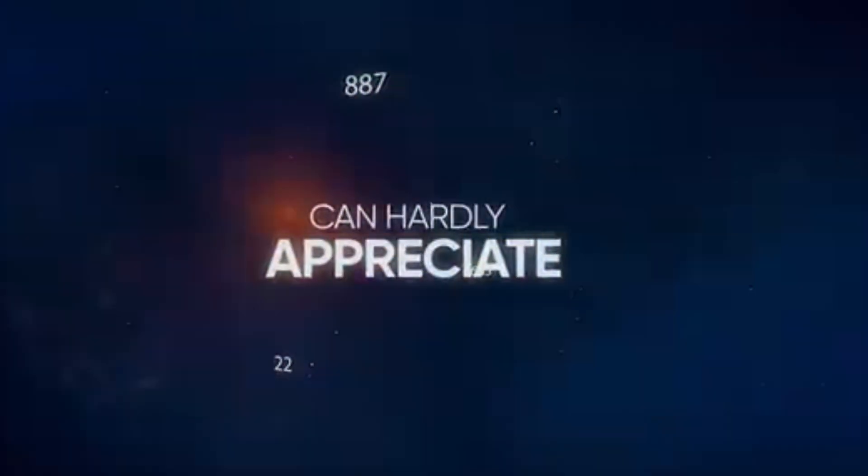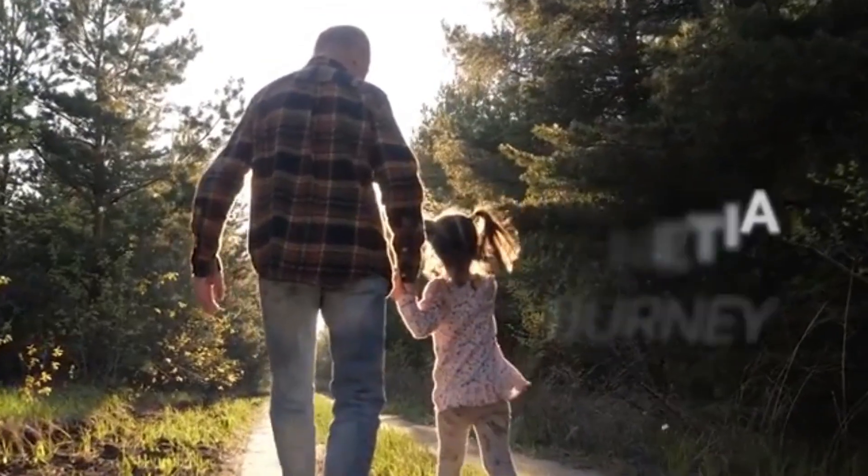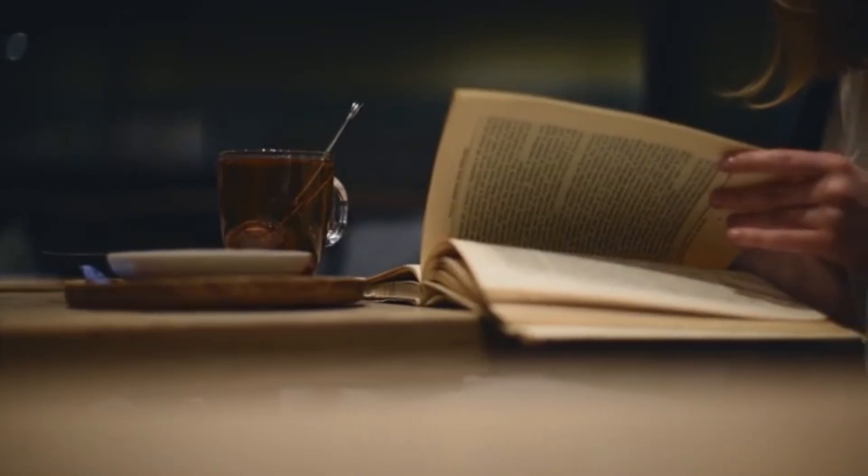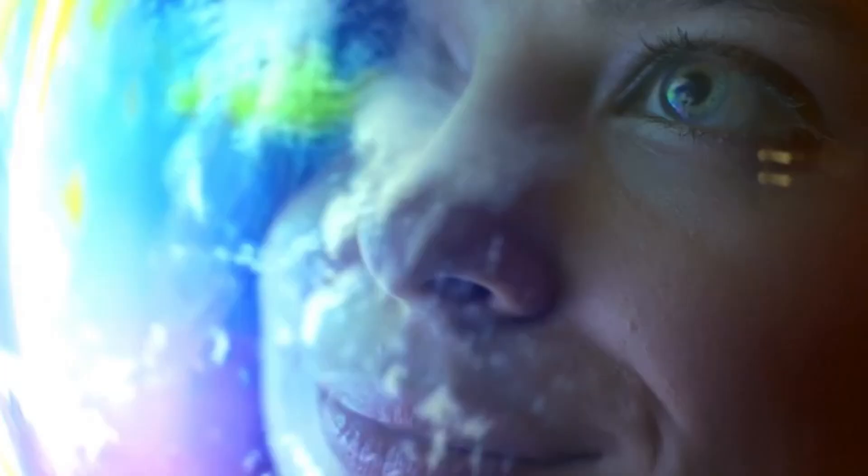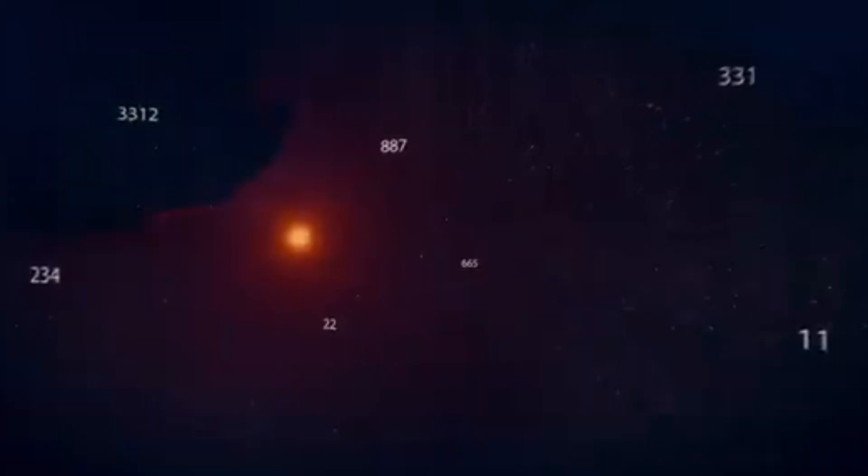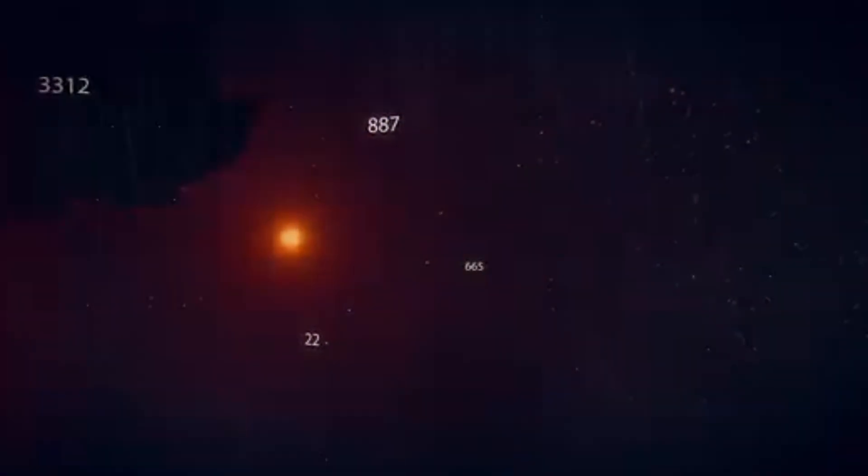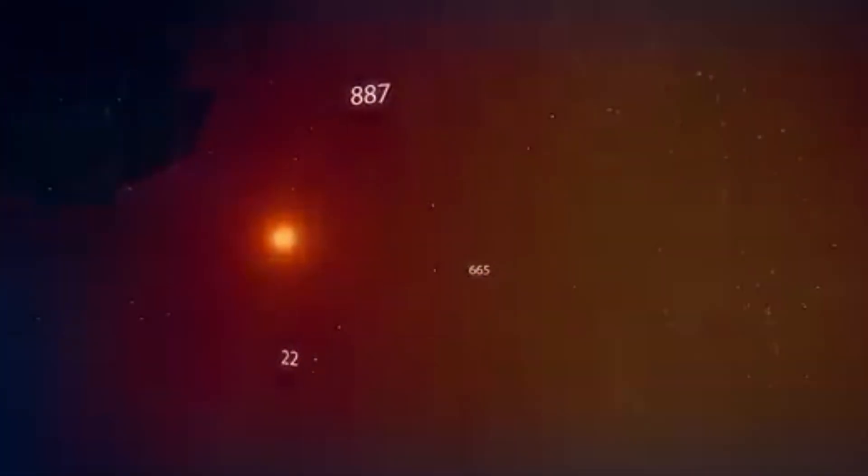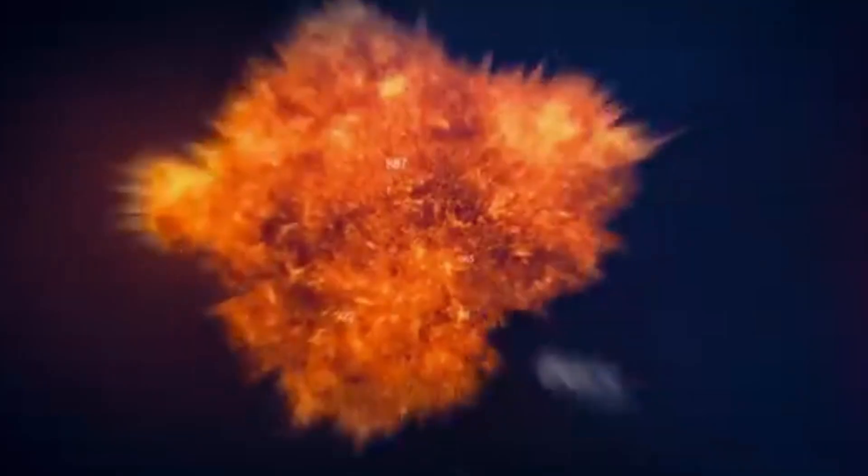Imagine you're on the solar system's outskirts, standing on Pluto's icy surface at minus 380 degrees Fahrenheit, minus 229 degrees Celsius, looking up at the sky. In that dark immensity, a star shines with a faint light. It's Alpha Centauri.